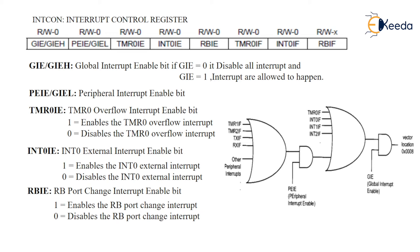RBIE is the port change interrupt enable bit. If it is 1, the RB port change interrupt is enabled; if it is 0, the RB port change interrupt is disabled. Pins RB4 to RB7 are configured as input pins for this interrupt. All four pins — RB4, RB5, RB6, and RB7 — are assigned to enable this port change interrupt.